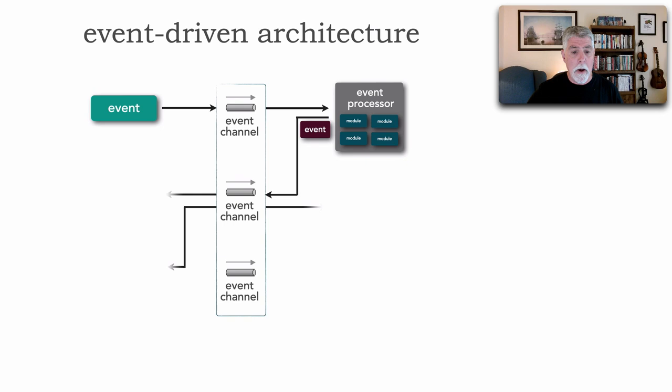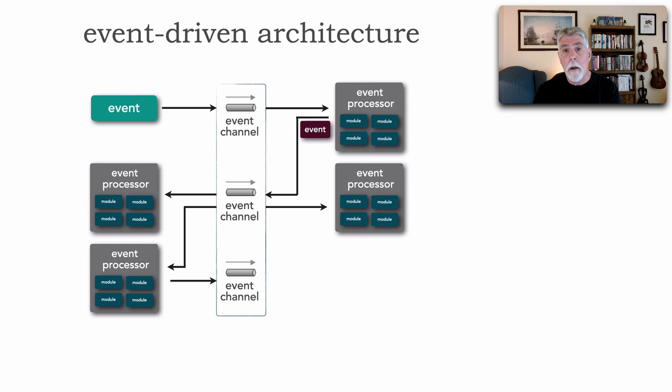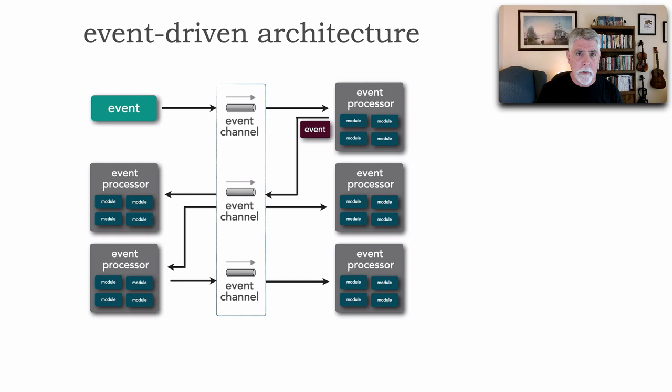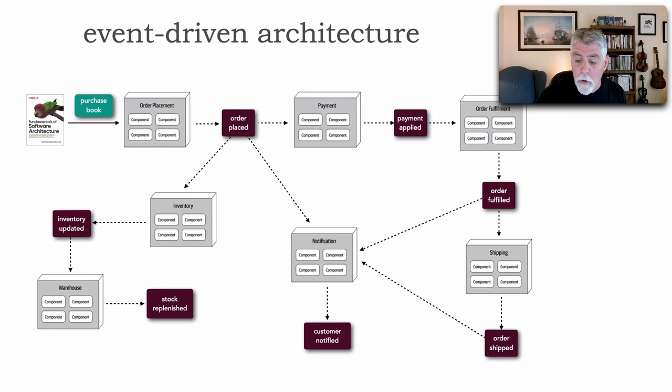And they may in turn also trigger events, those derived events which are then picked up by other event processors. And that's kind of how event-driven architecture actually works. Here's a good example of event-driven architecture from a happy path standpoint.